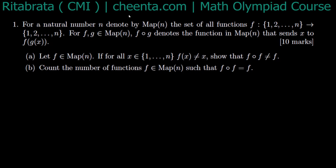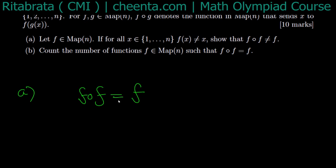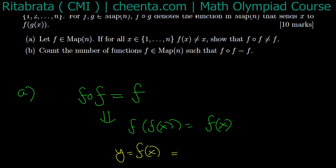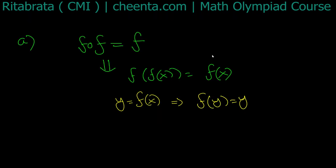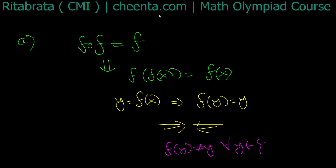The first part is easy. If f∘f equals f, then f(f(x)) equals f(x). Now fixing a particular x, I define y = f(x), which means f(y) = y. This is a contradiction — it contradicts that f(y) ≠ y for all y in {1, ..., n}. So f∘f is not equal to f.